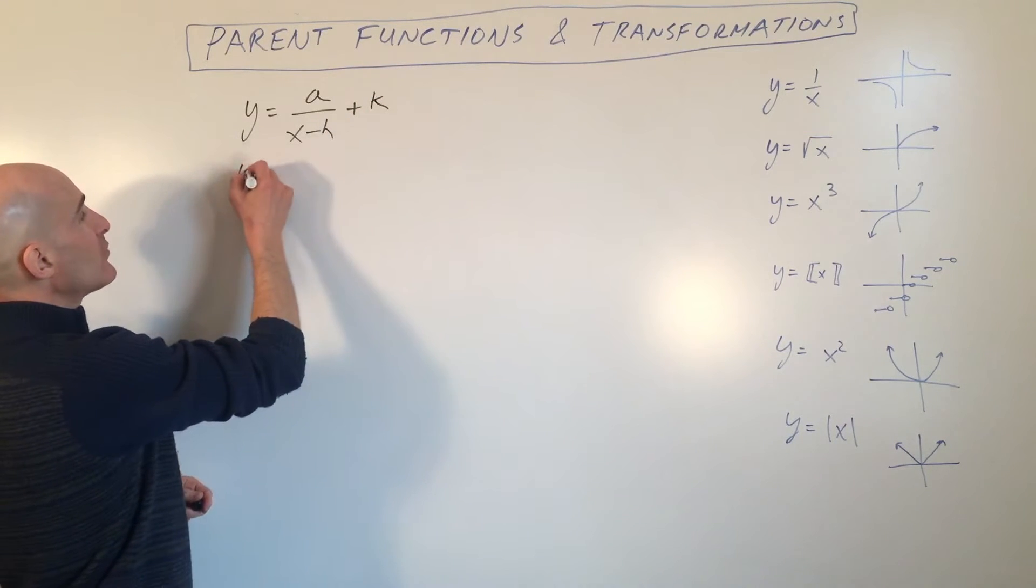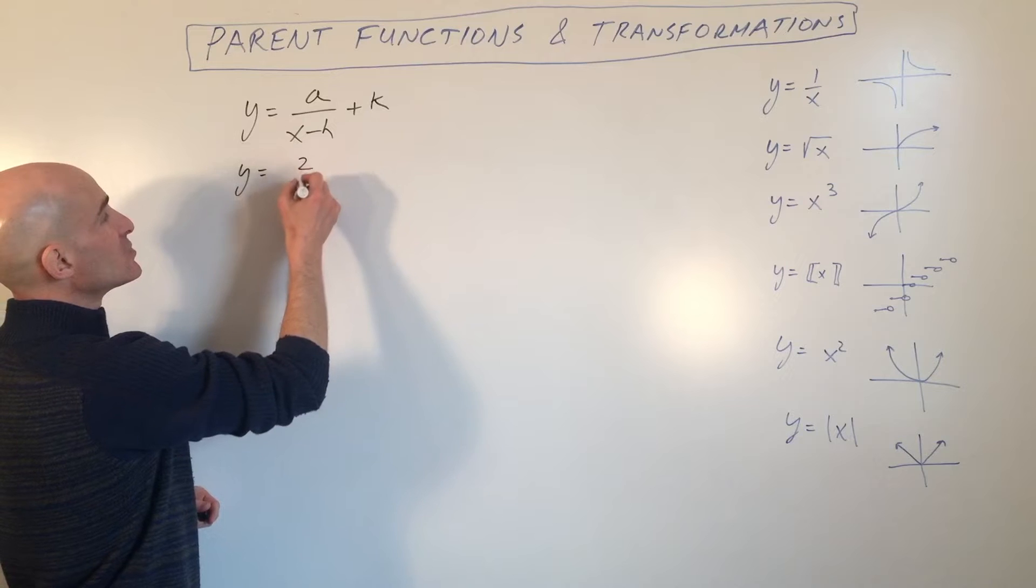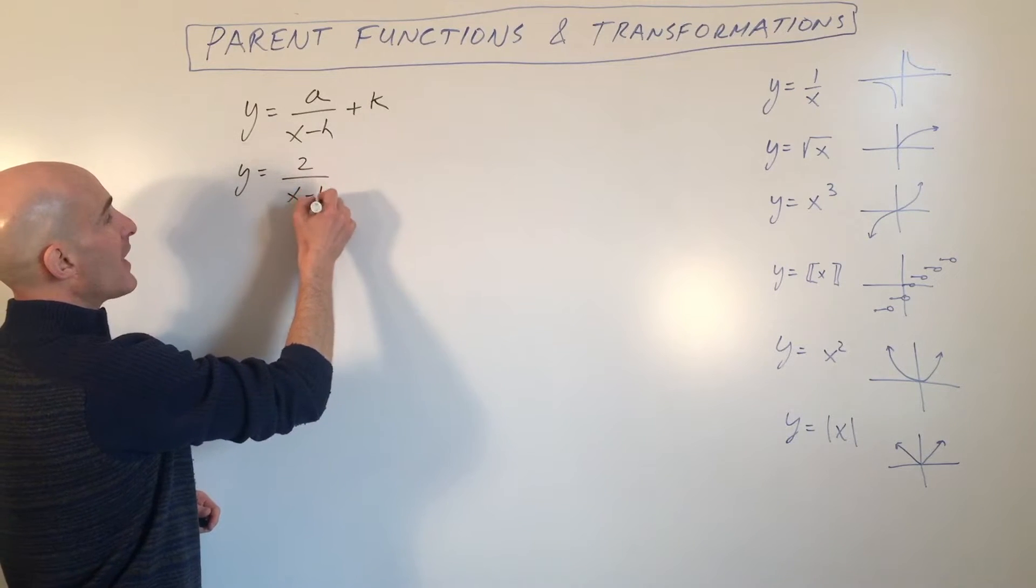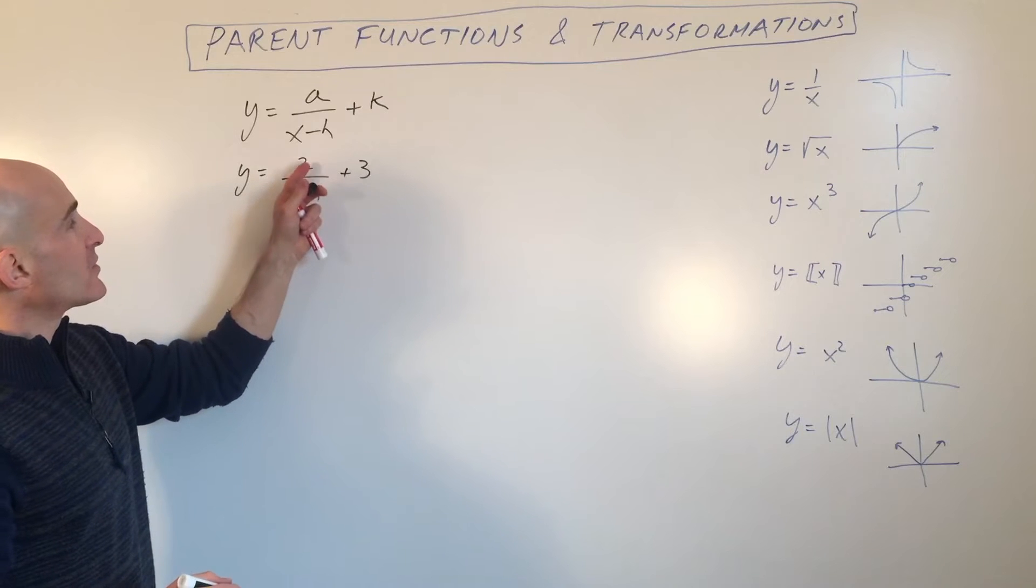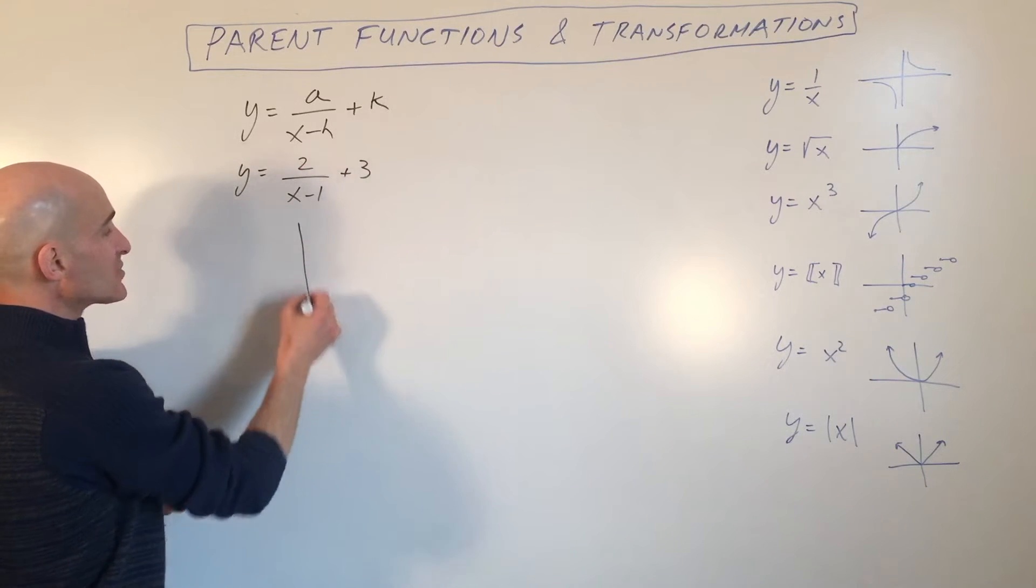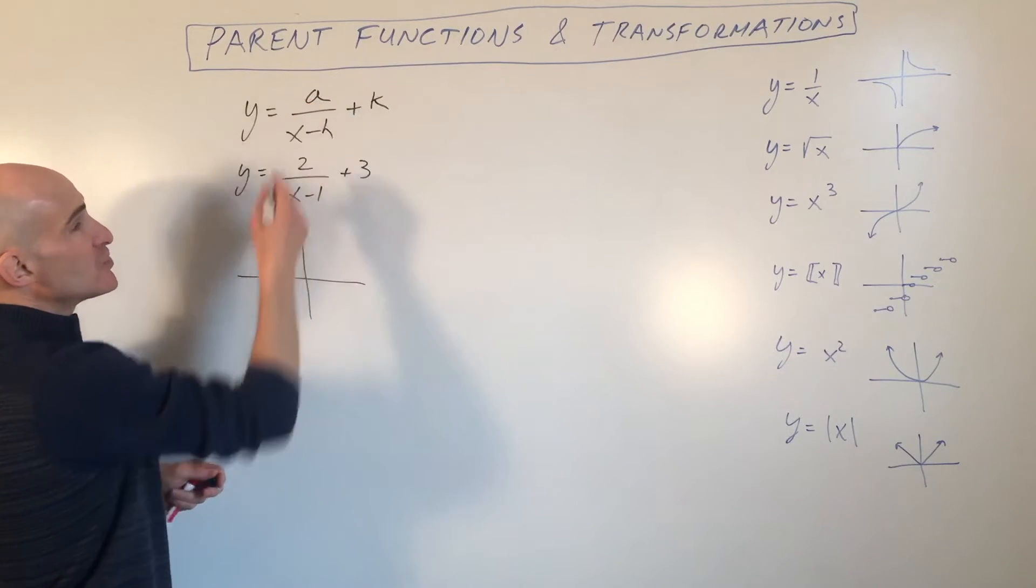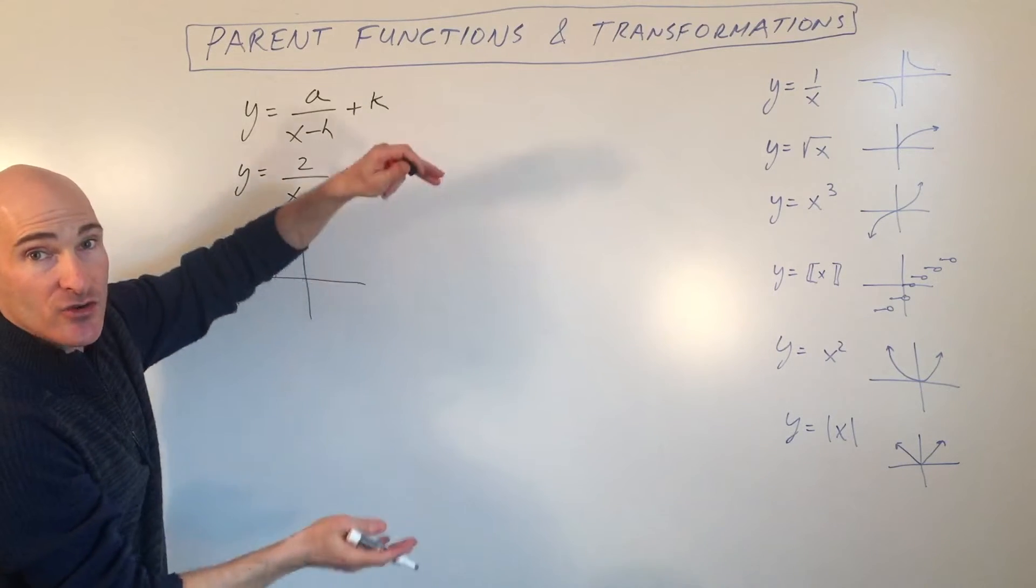So just to do a simple example, say we have y equals 2 over x minus 1 plus 3. So here what the 2 does, if you start off with your basic graph, what the 2 does is it's going to stretch the graph vertically.